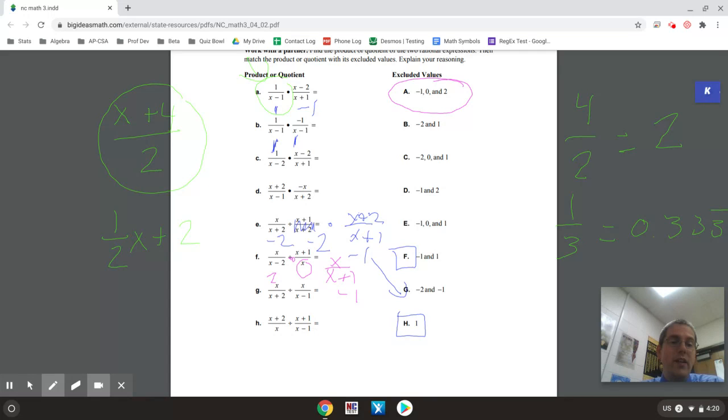For g, you should have a negative 2 and a positive 1. And for h, and also a 0 after you flip it. And h, originally, you should have a 0 and a positive 1, and then also a negative 1 after you flip that second fraction to do your division. So hopefully that helps you understand how to work these problems involving domain restrictions. Thank you.